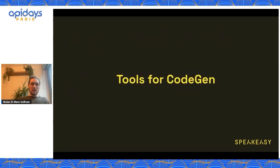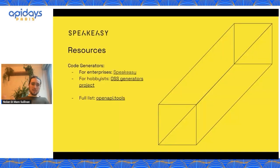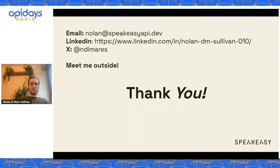In terms of tools you can use for CodeGen — obviously I work for Speakeasy, which is one tool you can potentially use. I would also suggest people check out the open source solutions that exist: there's the OSS generators project, which can certainly be a worthwhile solution. And if you're looking for a full list, there is a site called OpenAPI Tools which has a list of all the different code generators that are out there. Feel free to shoot me an email if you want to talk about CodeGen, SDKs, anything APIs and OpenAPI. And if you're coming to API Days Paris, feel free to try and find me outside. Thanks so much.